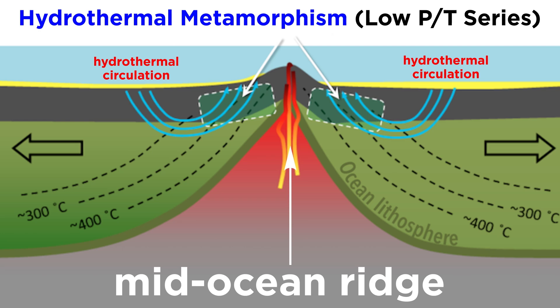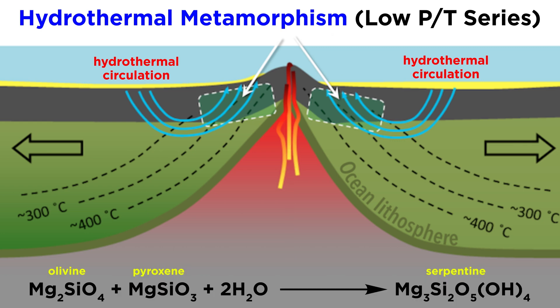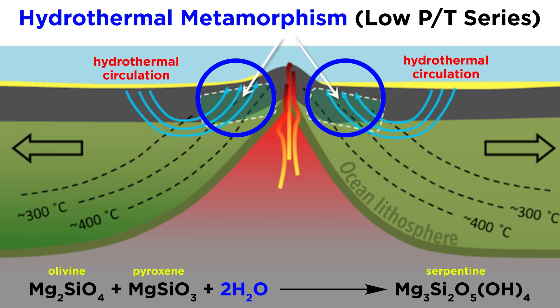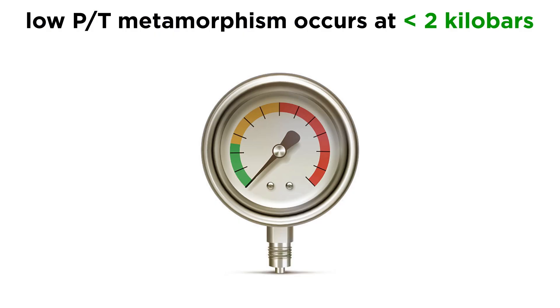Hydrothermal metamorphism occurs on a large scale around mid-ocean ridges, where heated ocean water circulates through the crust, altering olivine and pyroxene to serpentine. This is the water that is later released during subduction and is responsible for volcanism there. Generally, low-PT metamorphism occurs below a pressure of about 2 kilobars.